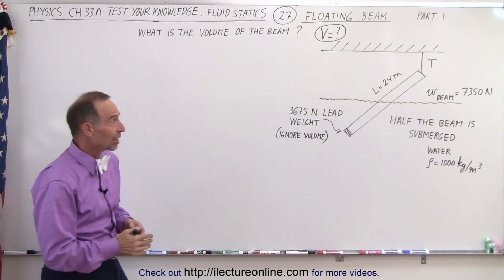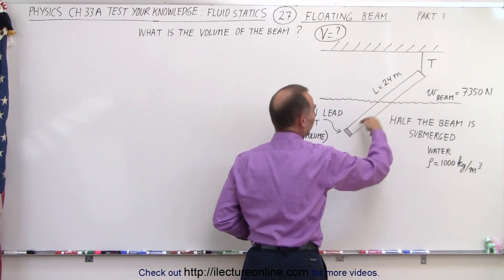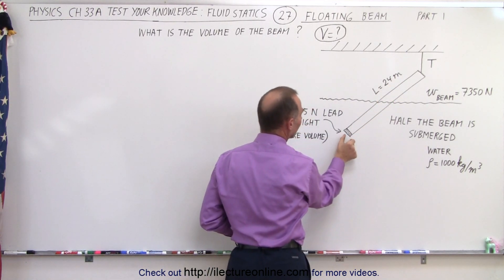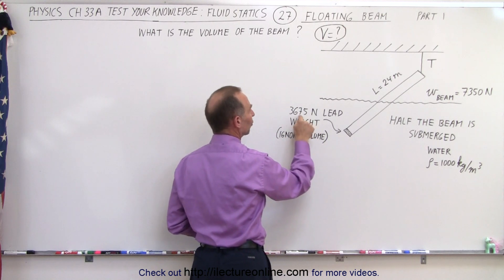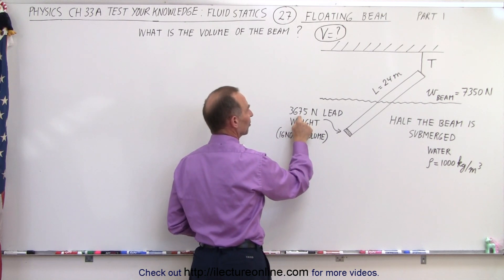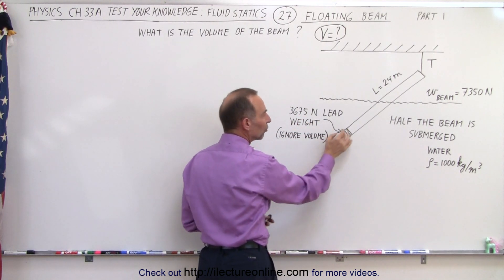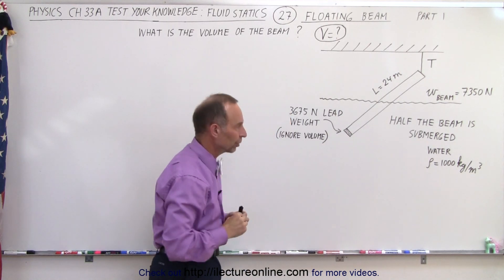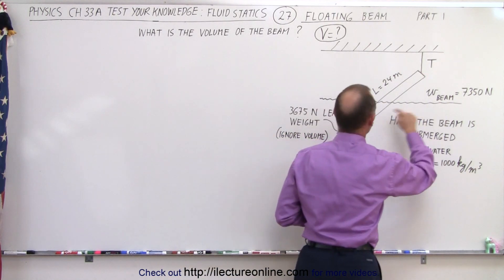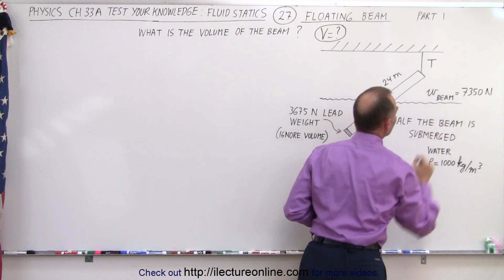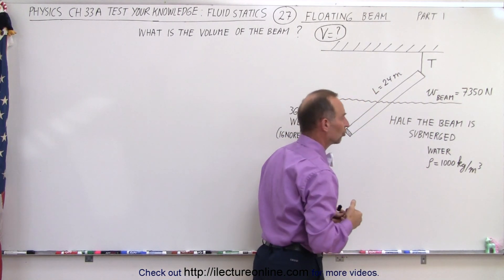What we have here is a very long beam — the length is 24 meters. At the very end of the beam there's a small weight attached to it which has a weight of 3675 Newtons. It's made out of lead and it's small enough so we can ignore the volume. The weight of the beam is double that — 7350 Newtons — and half of the beam is submerged.